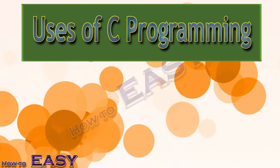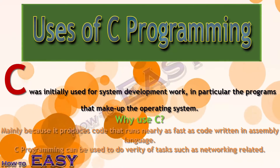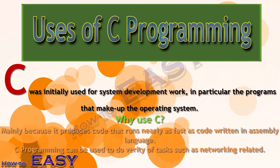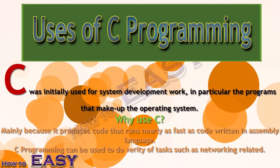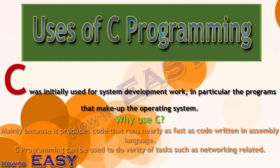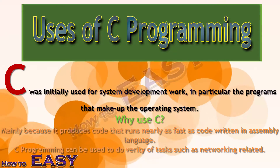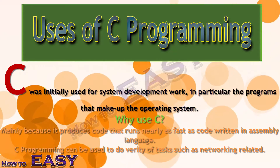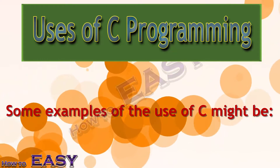Now, uses of C. C was initially used for system development work, in particular the programs that make up the operating system. Why use C? Mainly because it produces code that runs nearly as fast as code written in assembly language. C programming can be used to do a variety of tasks such as networking-related tasks.